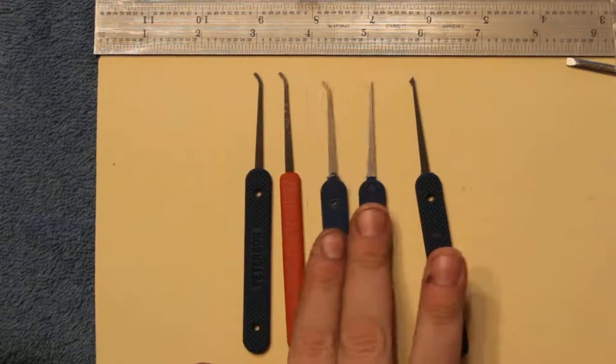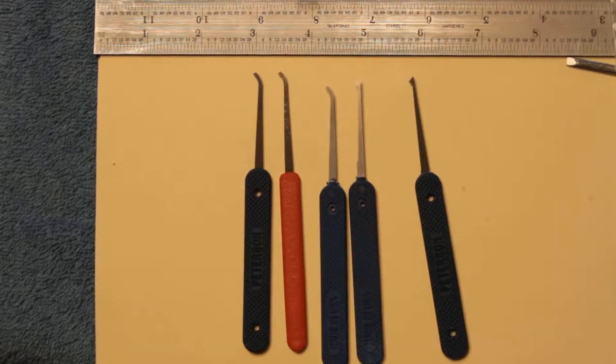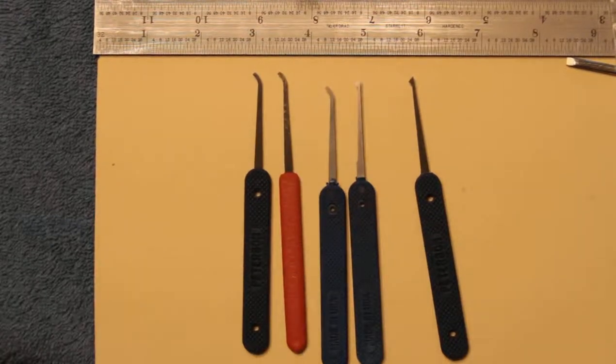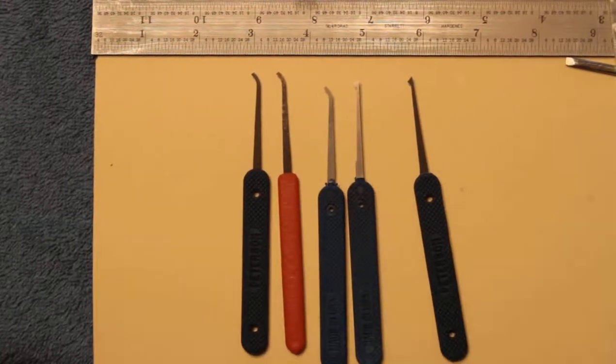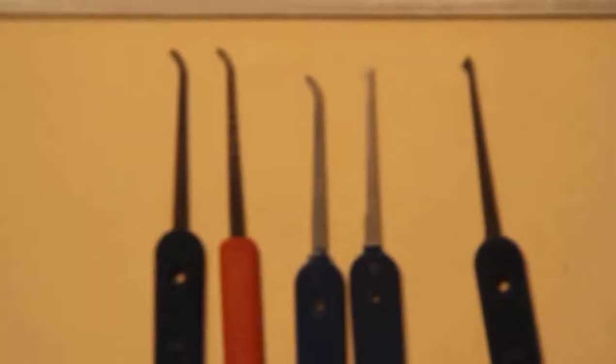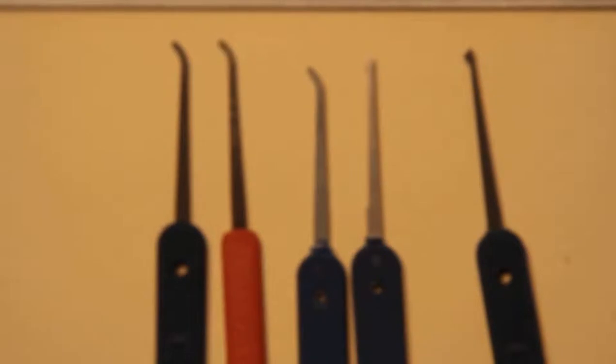And then the thin ones are .015 inches, which is really thin, but I find that great for some of these Euro locks that just have ridiculously narrow keyways. Let me zoom in a little bit and refocus.